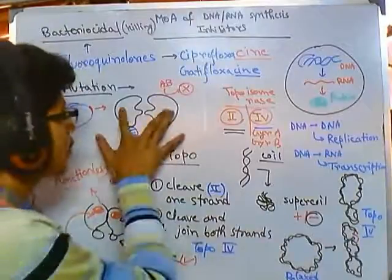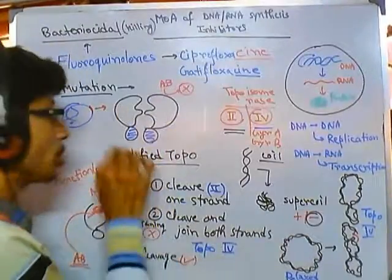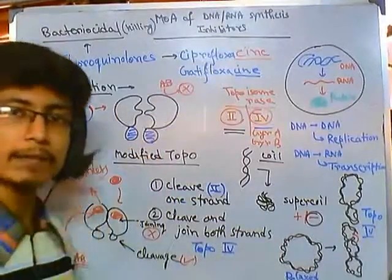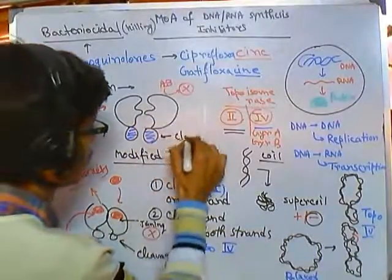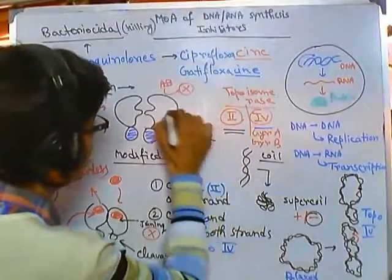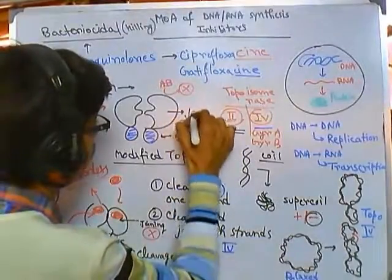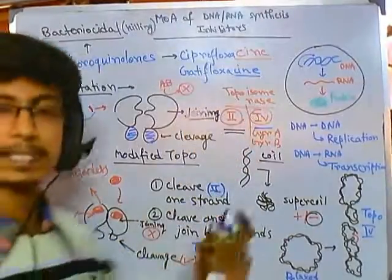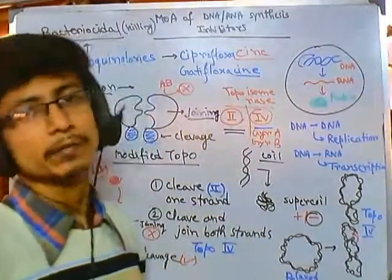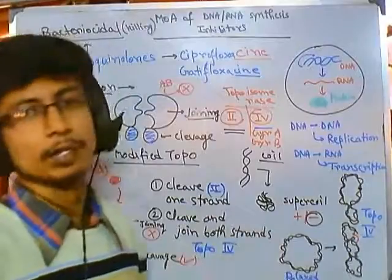As a result, this altered or modified topoisomerase can retain both of their functions—function of cleavage as well as function of joining. As a result, it will function properly inside the cell and the cell will live freely for a long period of time.